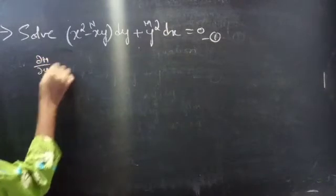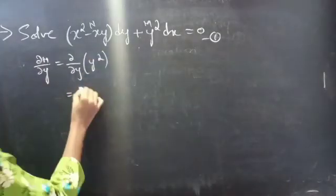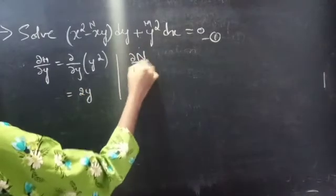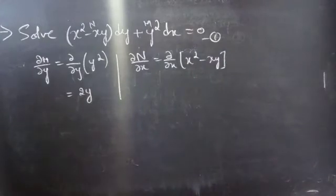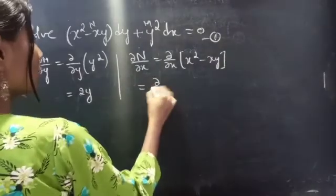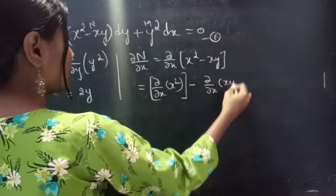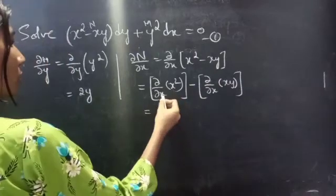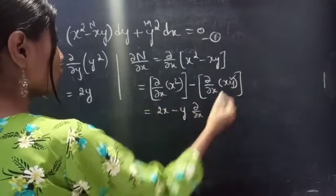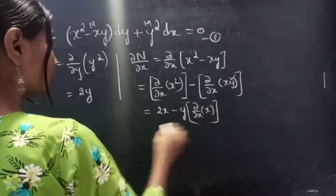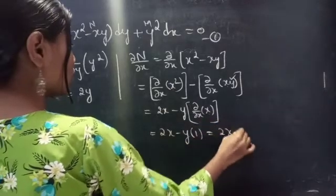∂M/∂y equals ∂/∂y of y² which equals 2y. ∂N/∂x equals ∂/∂x of (x² - xy). Since we are doing partial derivative with respect to x, y is treated as constant. This equals the partial derivative of x² minus y times the partial derivative of x with respect to x, giving 2x - y·1, which equals 2x - y.